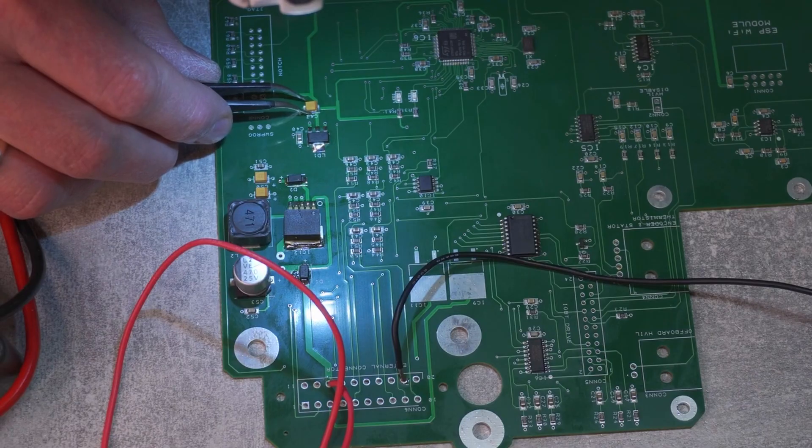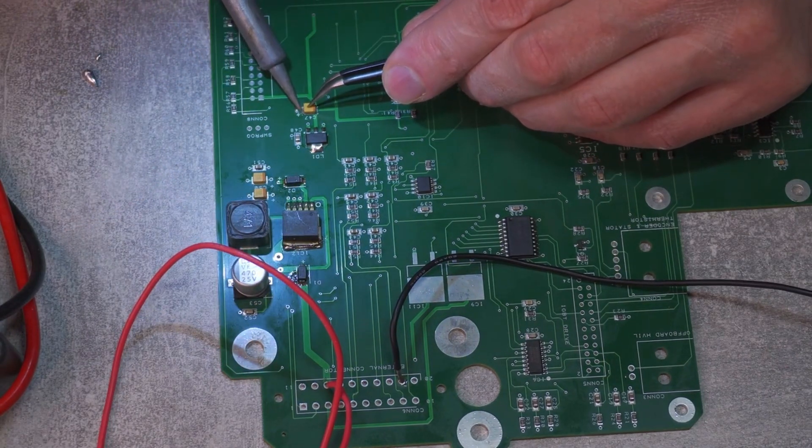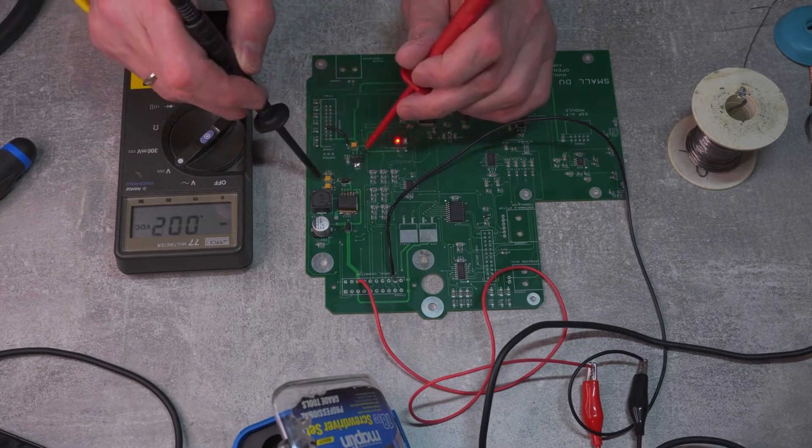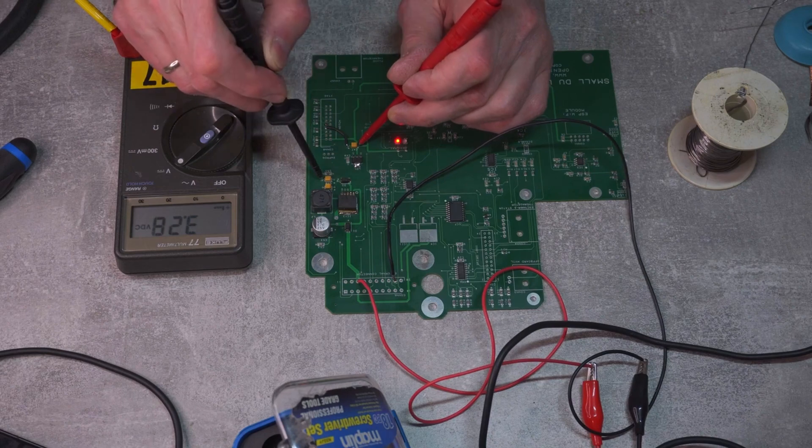I removed the capacitor using the same method as I used for the diode and soldered it back in with reversed polarity connection. Now power supply is on and now 3V, it's 3.28V and it seems quite stable. Another problem solved.